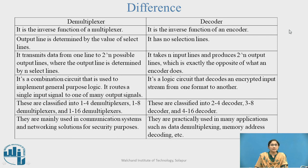Differences between demultiplexer and decoder: A demultiplexer is the inverse function of a multiplexer, while a decoder is the inverse function of an encoder. In a demultiplexer, the output line is determined by select lines, whereas a decoder has no selection lines. A demultiplexer transmits data from 1 line to 2ⁿ possible output lines. A decoder takes n input lines and produces 2ⁿ output lines. A demultiplexer routes a single input signal to one of many outputs for general-purpose logic, while a decoder decodes an encrypted input stream from one format to another.